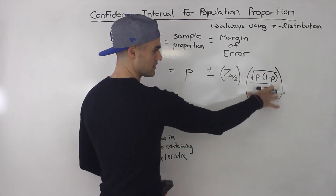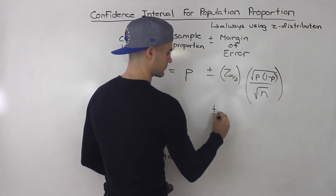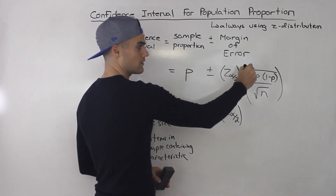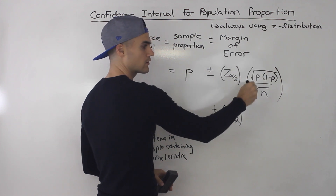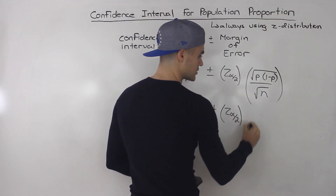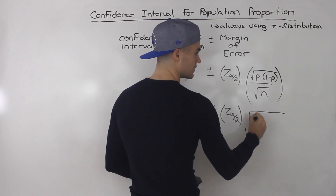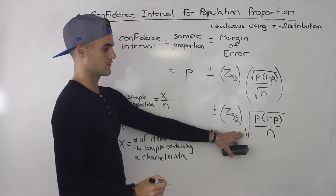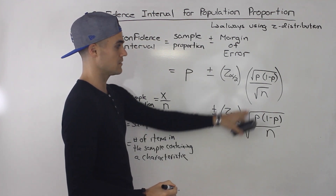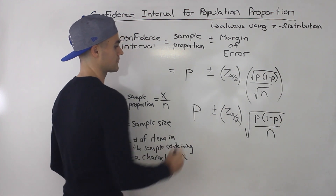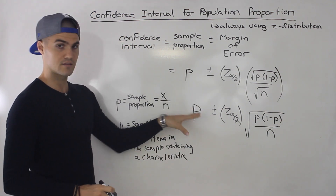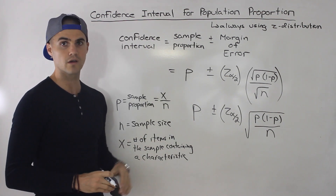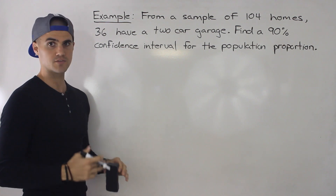Sometimes you'll see that portion represented under one square root, because taking the square root of a numerator divided by the square root of a denominator is the same as taking the square root of the whole fraction. So both notations are equivalent. This is the general format for the confidence interval when working with proportions. Let's work through an example.